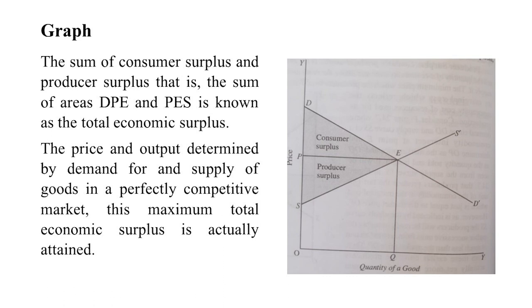Price and output determined by the demand and supply of goods in a perfectly competitive market results in this maximum total economic surplus being actually attained. This is only possible in the case of perfect competition, where it is assumed that economic surplus is maximum when both consumer surplus and producer surplus are high.